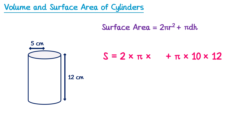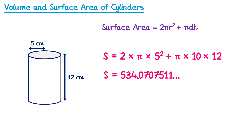If the question said to give your answer to one decimal place, you could just type the whole entire calculation into your calculator. That would give you a decimal value which, rounded to one decimal place, would be 534.1 centimeters squared.